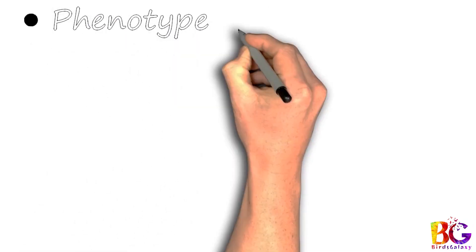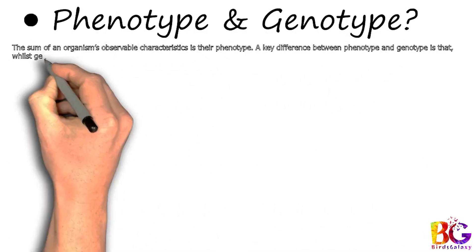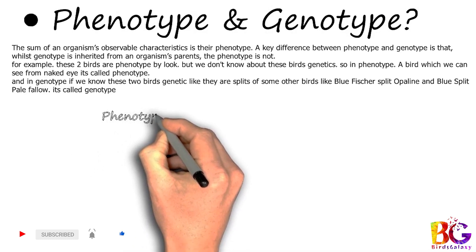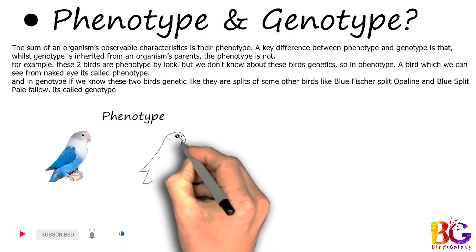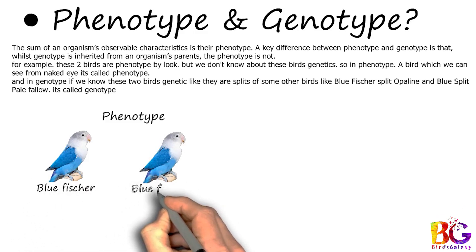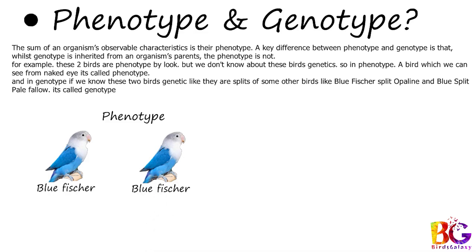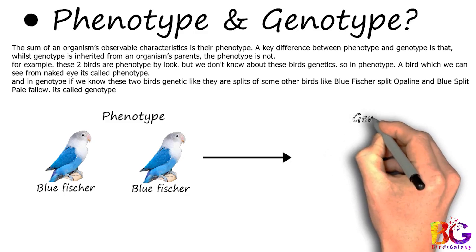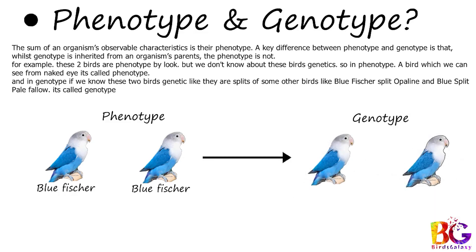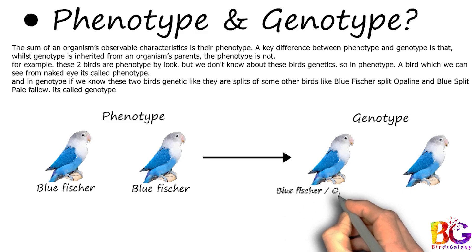The last topic is phenotype and genotype. So what is a phenotype? The sum of an organism's observable characteristics is its phenotype. A key difference between phenotype and genotype is that whilst genotype is inherited from an organism's parents, the phenotype is not. For example, these two birds are bluefisher — that's the phenotype we see, but we don't know their full genetics. What we see with the naked eye is called phenotype. In genotype, if we know these two birds' genetics — like they are splits of some other mutation, such as bluefisher split opaline and blue split pale fallow — that is called genotype.